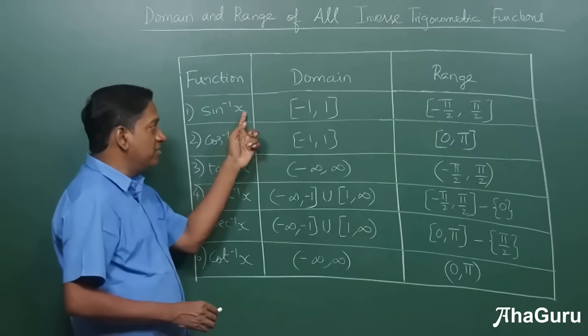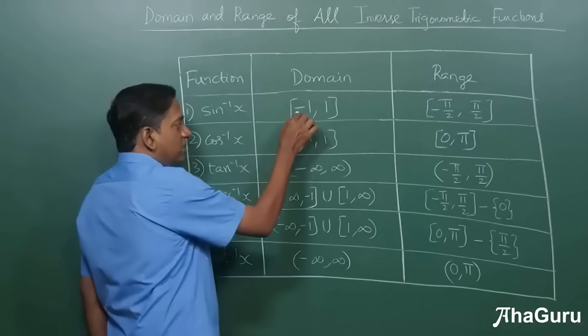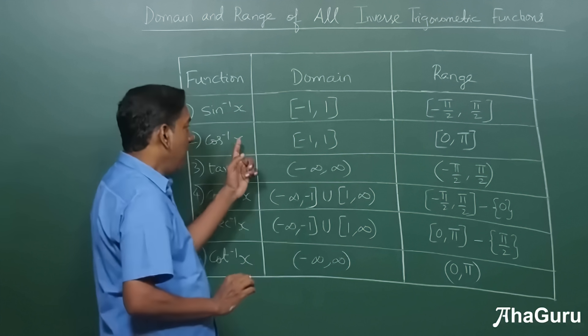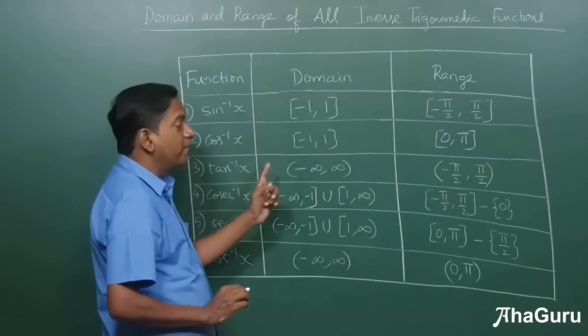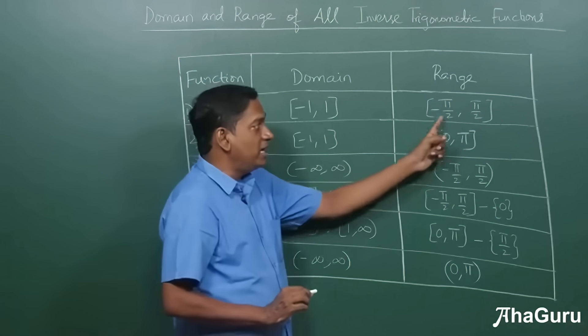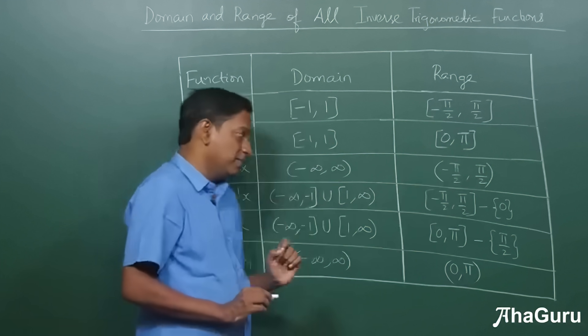So if you take sine inverse and cos inverse, their domains are the same: [-1, 1] and [-1, 1]. That means x has to be such that mod x is less than or equal to one, and the ranges are minus pi by two to pi by two for sine inverse and zero to pi for cos inverse.